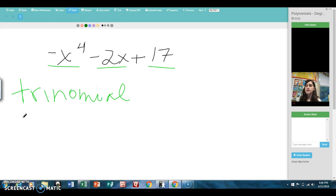The biggest degree that I see here, the biggest exponent, is the 4. When something is degree 4, it also has a special name. So we've already heard cubic and quadratic. Degree 4 is called quartic. So this is a quartic trinomial.